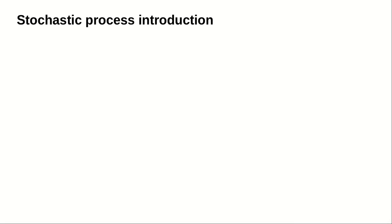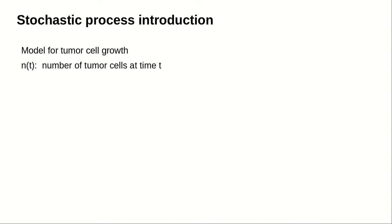A stochastic process introduction. Let's think about possible models for the growth of a tumor over time. We'll let n be the number of tumor cells at time t, and let lambda be the growth rate of the cell population.